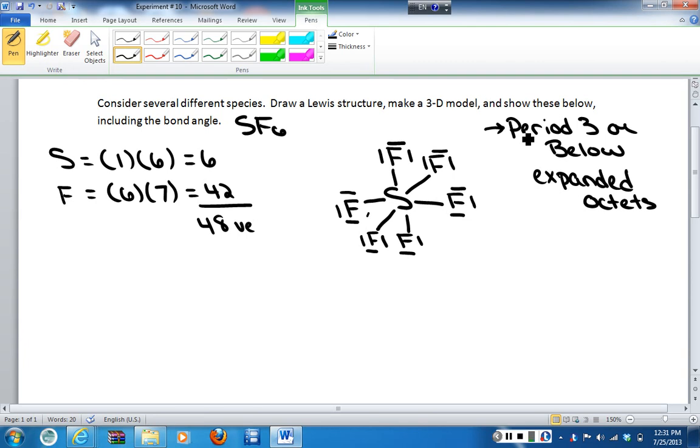I've used all 48 of my valence electrons and everything has an octet. So we have the Lewis structure of sulfur hexafluoride. Now, in terms of generating a 3D model, we have to look at the central atom, the sulfur, and determine how many total regions of electron density are around the central atom. We see that there are 6 regions.